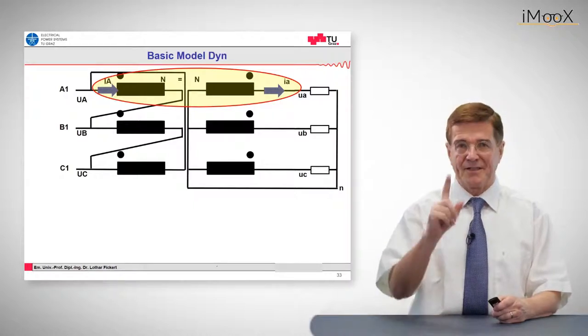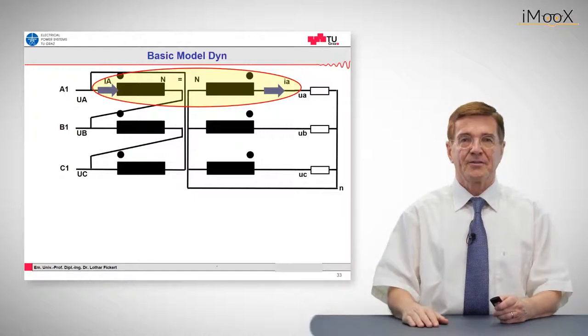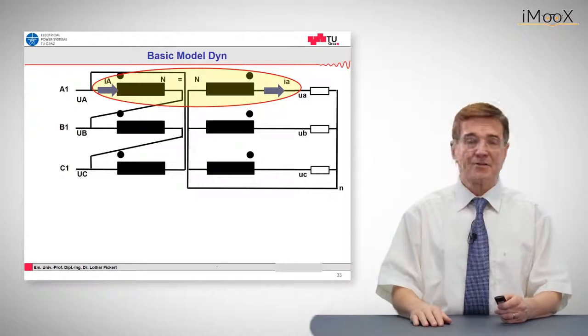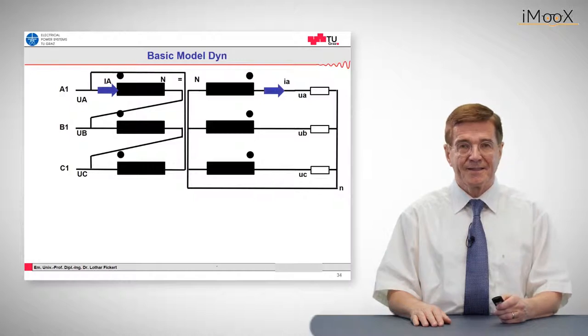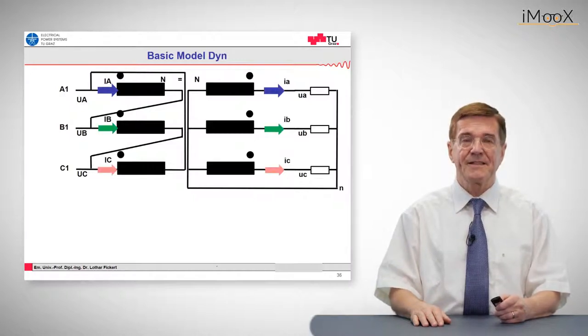So let's start again in phase number one with a current on the low voltage side. So the low voltage current is transformed if the number of turns is equal to the same current on the primary side. So the same happens in phase A, happens in phase B and in phase C.